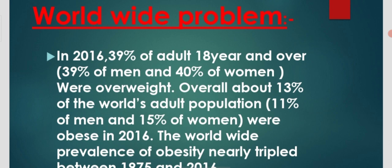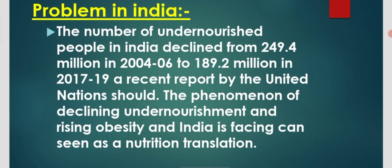The next is the problem in India. The number of under-nourished people in India declined from 249.4 million in 2004–06 to 189.2 million in 2017–19, according to a recent report by the United Nations. The phenomena of declining under-nourishment and rising obesity in India can be seen as a nutritional transition.